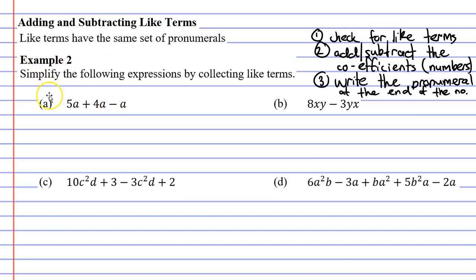If we look at example two you'll notice that we have three terms: 5a, 4a, and negative a. They all have the same pronumeral or set of pronumerals. So we're going to underline them. They are all like terms. That's step one, checking for like terms.